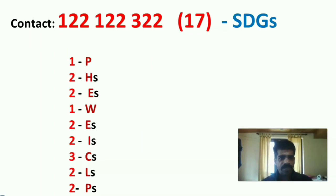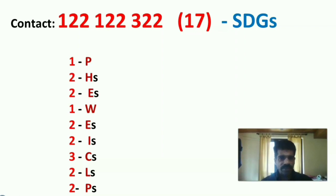The second part is the contact number to achieve Sustainable Development Goals: 1-2-2, 1-2-2, 3-2-2. Total it becomes 17. So you have to remember 1 double-2, 1 double-2, 3 double-2.